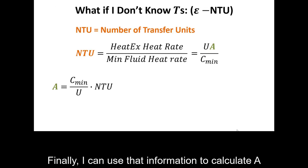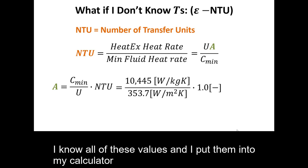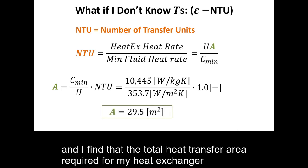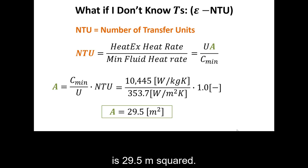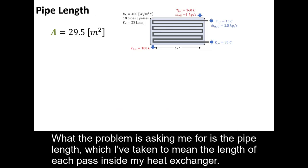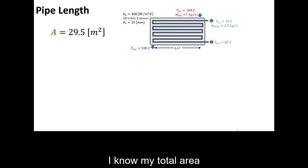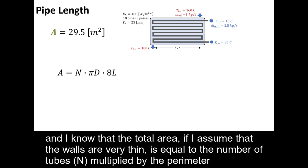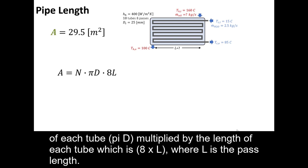With all values known, I calculate the total heat transfer area required: A = NTU · C_min / U, and find it is 29.5 square meters. The problem asks for pipe length, specifically the length of each pass. The total area equals the number of tubes n, multiplied by the tube perimeter π·d, multiplied by the total tube length per tube, which is 8 times L, where L is the pass length.